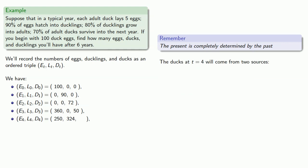And again, the ducks at t equals four come from two sources: 70% of the 50 ducks at t equals three. Well, they'll still be ducks at t equals four, so that's 35 ducks. And any ducklings we had at t equals three will become ducks. But again, there aren't any ducklings at this time. So we'll just have 35 ducks.